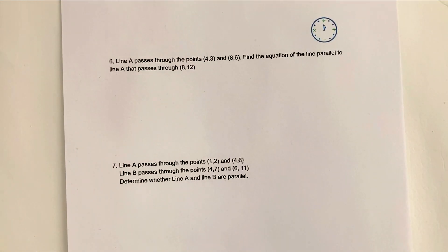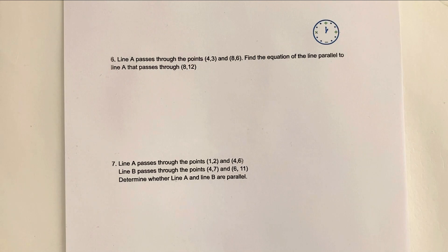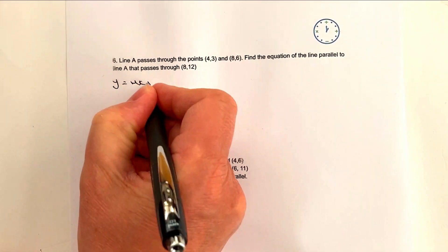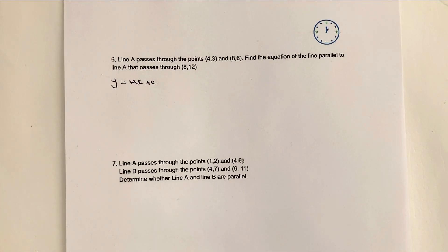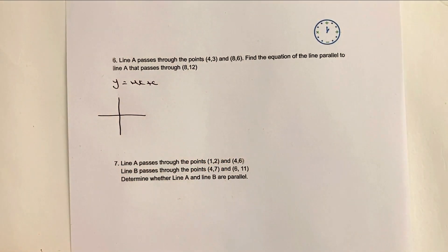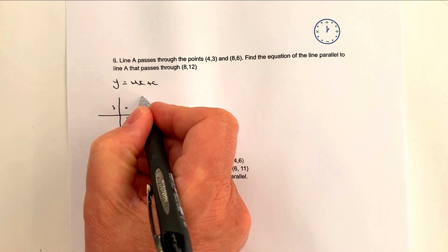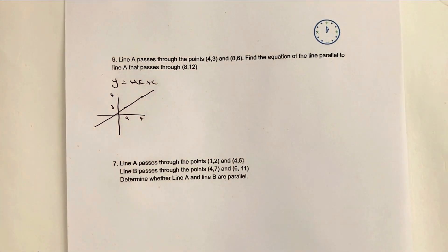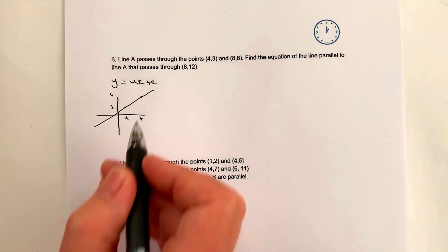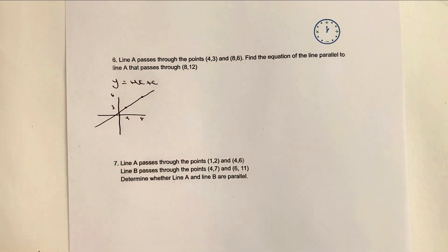Question six: line A passes through those points. Find the equation of a line parallel to line A that passes through (8, 12). This is a grade-six type question. We need the form y = mx + c. The gradient is the difference in y divided by the difference in x. If I sketch this: a line through (4, 3) and (8, 6), with a parallel line passing through (8, 12).